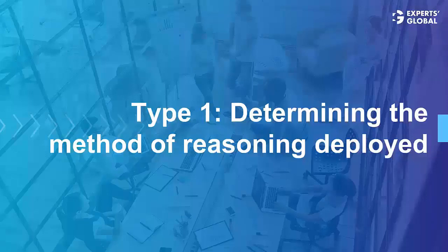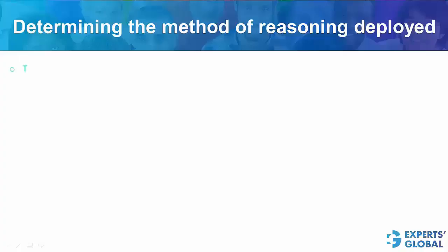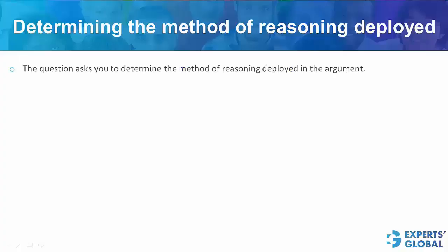Type 1: determining the method of reasoning deployed in the argument. The question asks you to determine the method of reasoning deployed in the argument. This is what the question typically looks like.